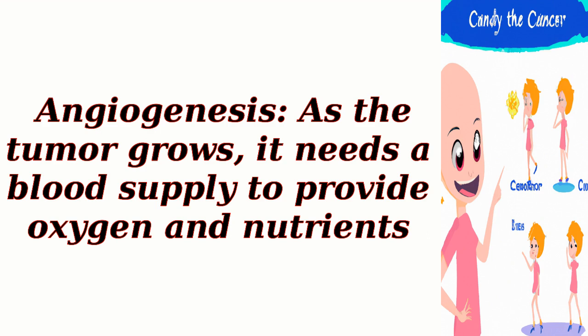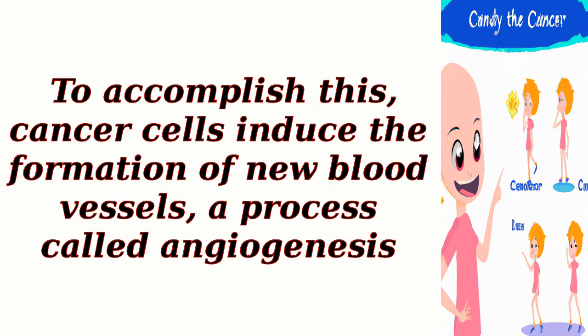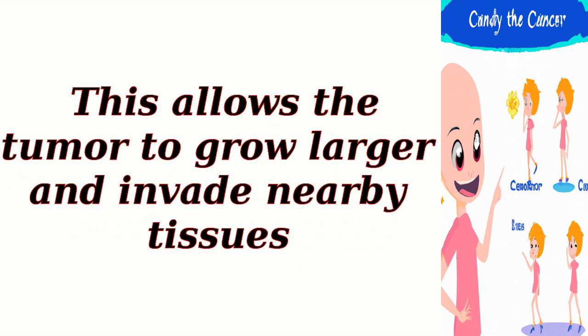As the tumor grows through angiogenesis, it needs a blood supply to provide oxygen and nutrients. To accomplish this, cancer cells induce the formation of new blood vessels, a process called angiogenesis. This allows the tumor to grow larger and invade nearby tissues.